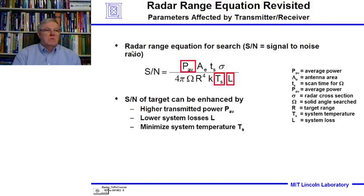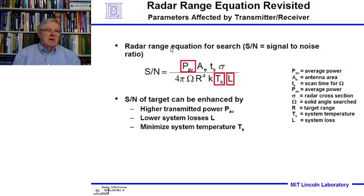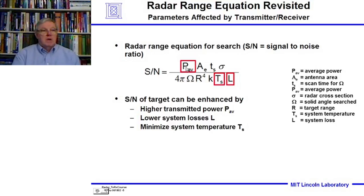Looking at the radar equation — this is the only equation we'll look at in this lecture — I want to focus on the importance of power. The most important thing we want to do is maximize the signal-to-noise ratio: how strong the target is relative to the noise. We have three things in the transmitter-receiver chain that come into play: the average power of the radar, the system noise temperature, and the system losses. We want the noise temperature and losses to be as low as possible.